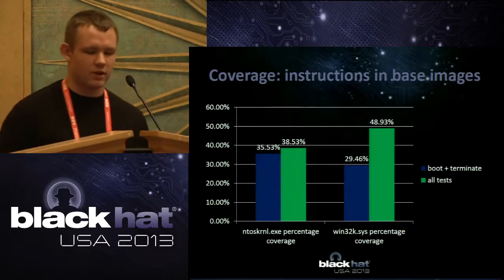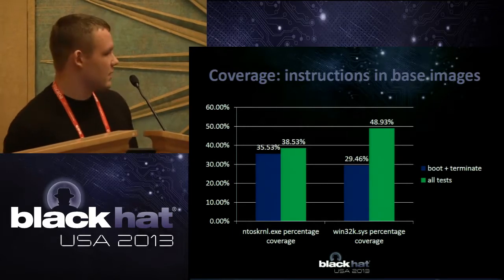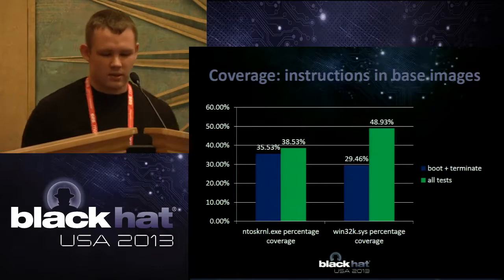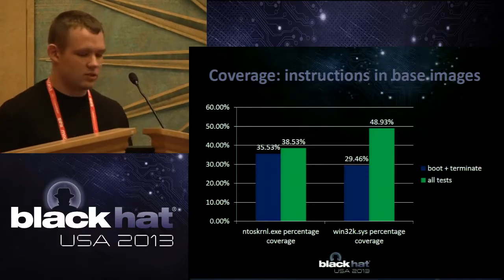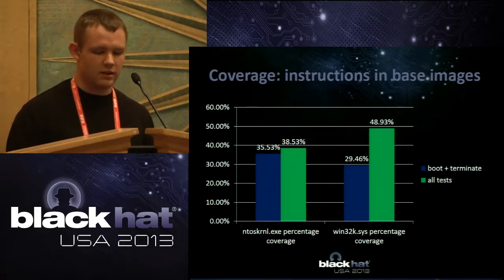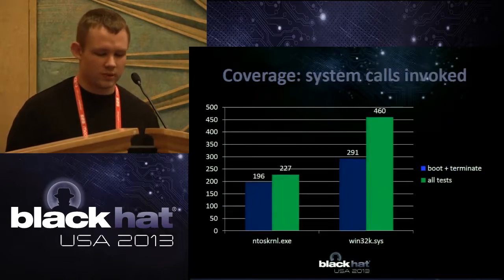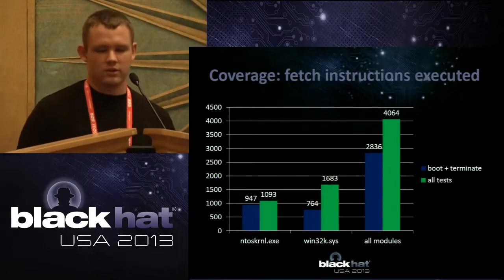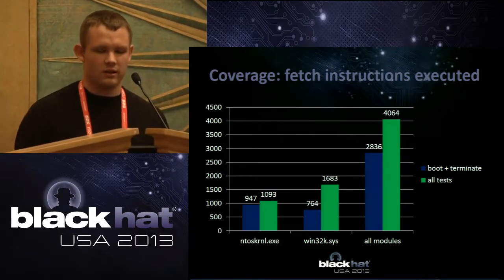For code coverage, we booted the system, did some navigation like running Internet Explorer and other default tools, played some multimedia, started StarCraft 1, and ran Wine conformance tests. For Win32K the coverage is about 50%, but there's much room for improvement. We believe a moderately smart syscall fuzzer could dramatically — maybe two or three times — improve the code coverage we have now, and we're currently working on that. The statistics show the sizes of code coverage for the two most important kernel modules: the base kernel and Win32K.